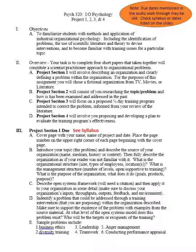The second section consists of actually researching the topic and problem and how it has been examined and addressed in the past. This is more the 'scientist' part of the scientist-practitioner model — looking up empirical research articles. For example, if your organization has a job satisfaction problem, you look up research on how to increase job satisfaction. If it's a training issue, look at workplace skills training. If it's diversity or leadership, find articles addressing those.